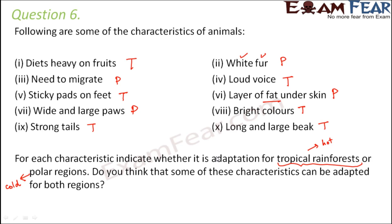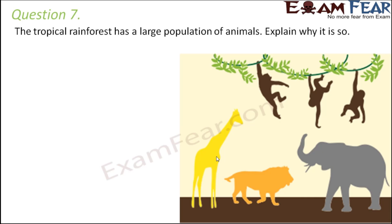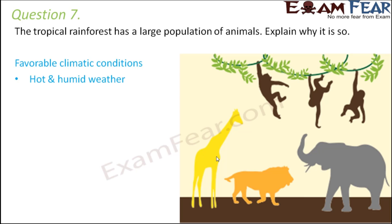Question number seven: the tropical rainforest has a large population of animals — explain why. The primary reason is favorable climate. The weather is hot and humid, and surviving in extreme cold weather requires a lot of adaptations, whereas hot and humid weather is easier to adapt to. Moreover, since many animals live there they can get food from each other. Frequent rainfall ensures an adequate supply of water, making survival easier.